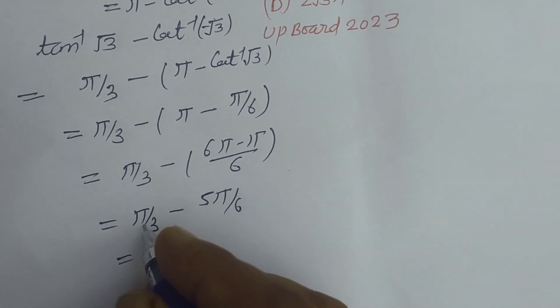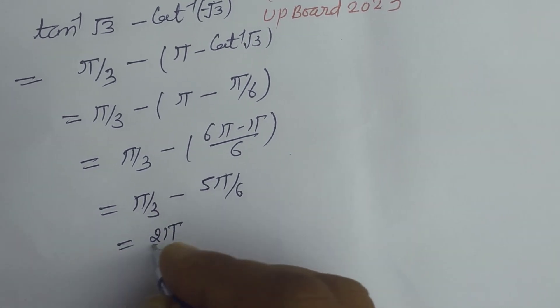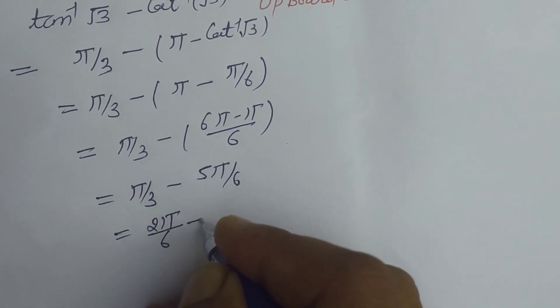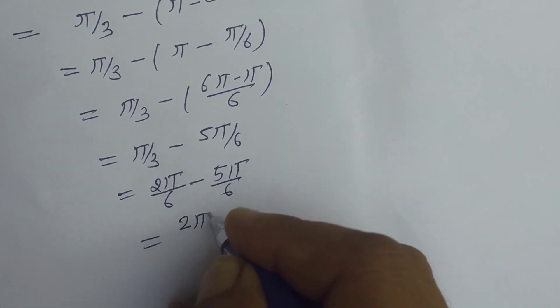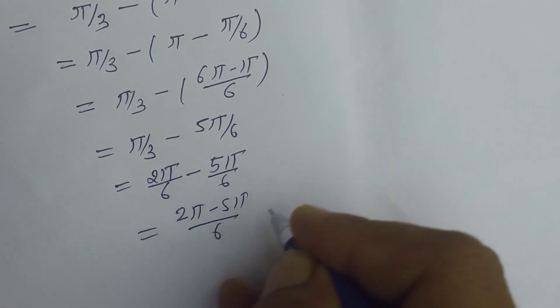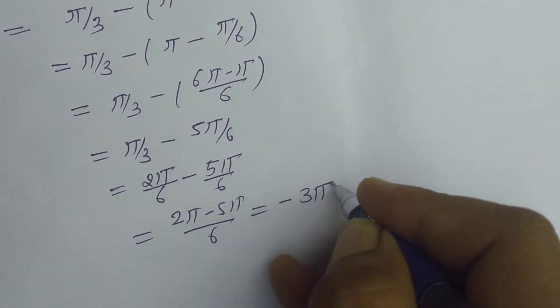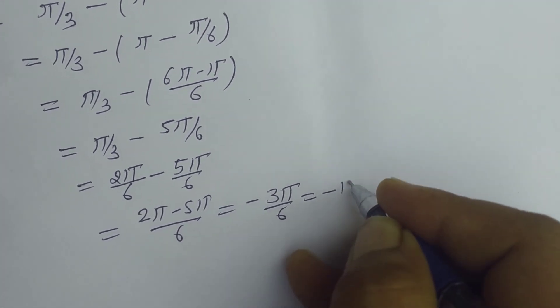Making the numerator the same, we multiply by 2, so 2π/6 - 5π/6. This equals -3π/6, which simplifies to -π/2.